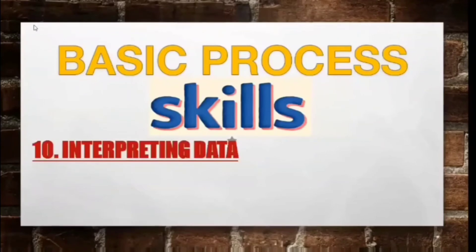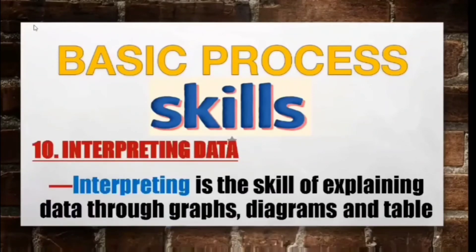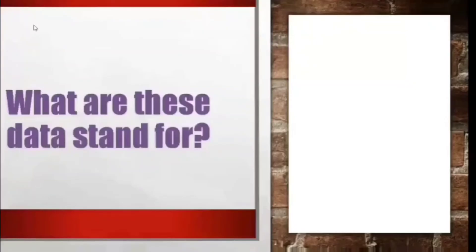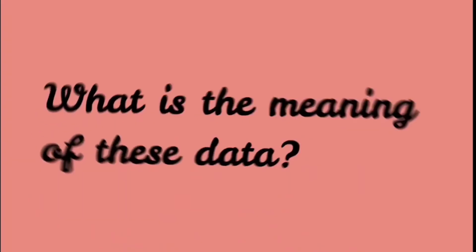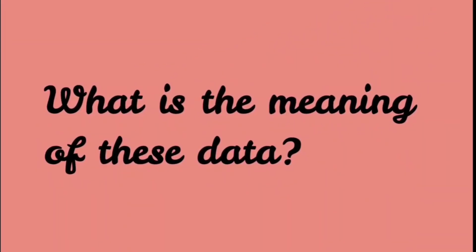Skill number ten: interpreting. Interpreting is the skill of explaining observations through graphs, diagrams, and tables. From the data you have recorded during an experiment, you need to interpret them before you can make a final answer to the problem you wanted to solve. Interpreting answers the questions: what do these data stand for, and what is the meaning of this data?